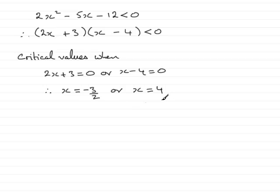So, we have our critical values. Now, the next stage, remember, is to draw a sketch. All right. And we're going to be drawing the sketch of the graph y equals. And it's going to be this equation here, 2x squared minus 5x minus 12, which we've already seen factorizes to 2x plus 3 multiplied by x minus 4.